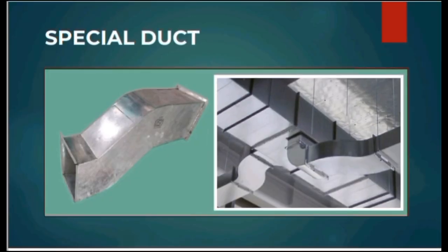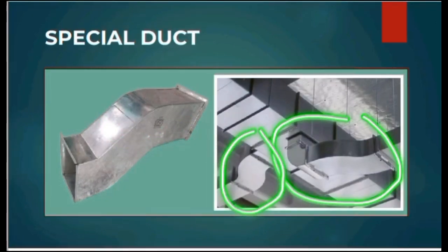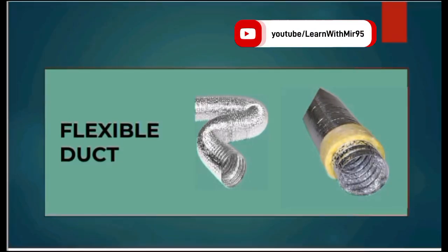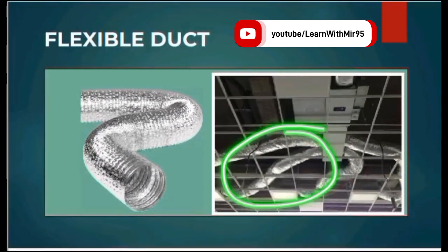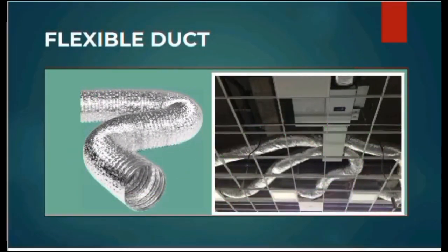Then we have a special duct called an offset, which is used to pass duct easily when there is any hindrance in a plant or industry. Another accessory is flexible duct. It is used where we have limited space and it is hard to install duct support. It is easy to use and requires less manpower to install.